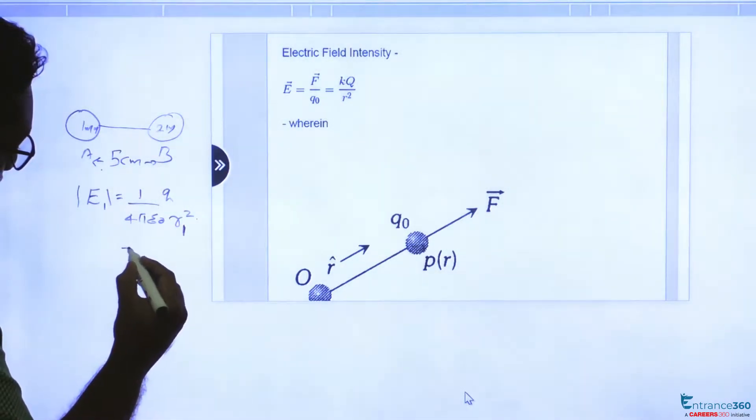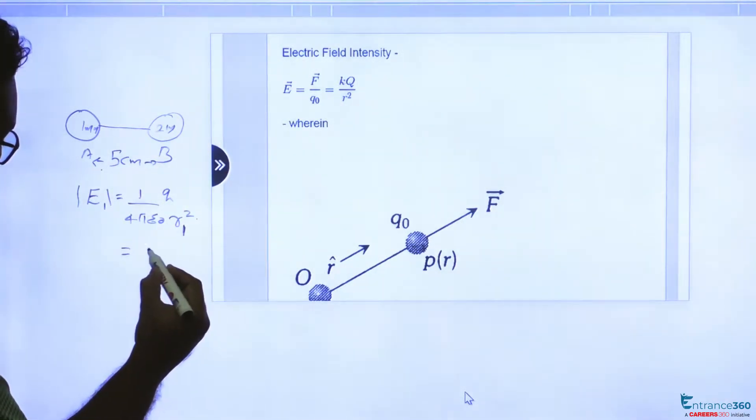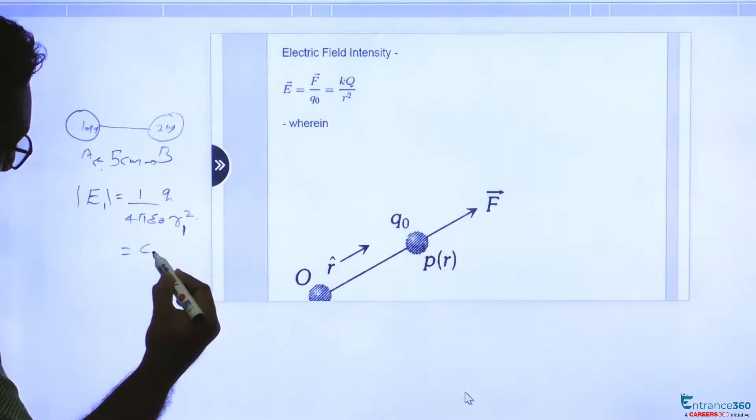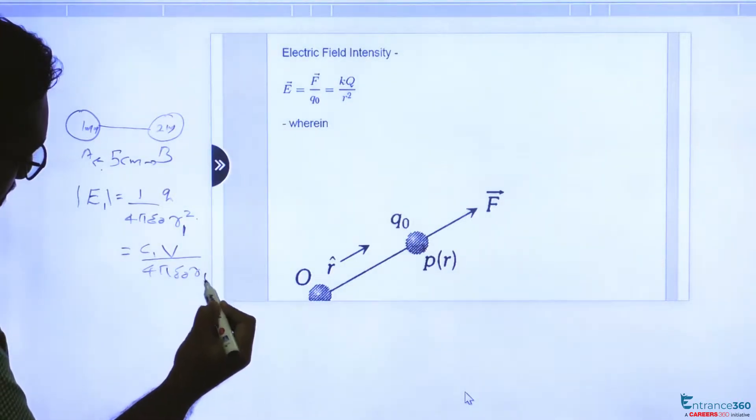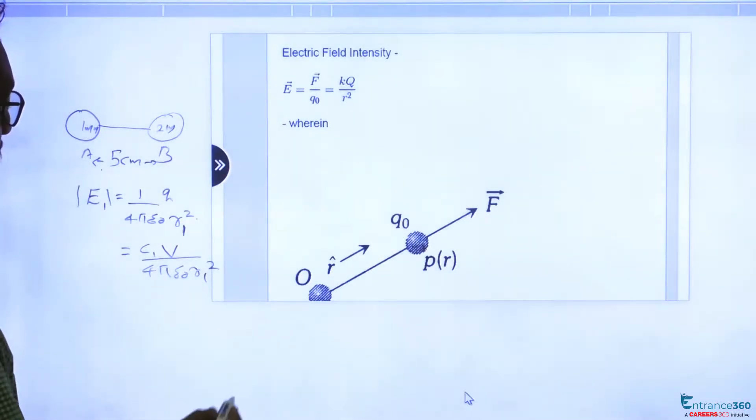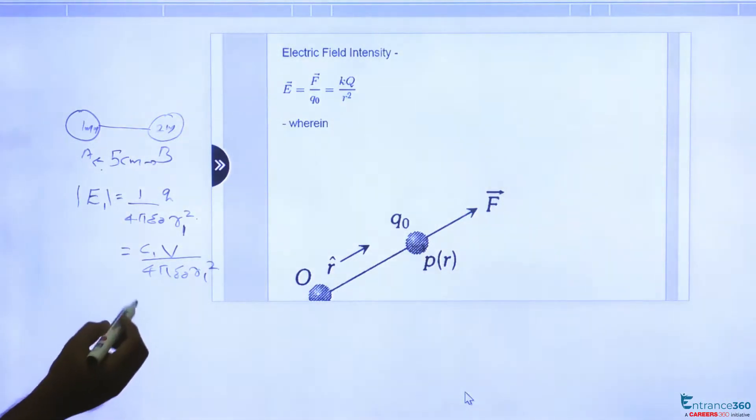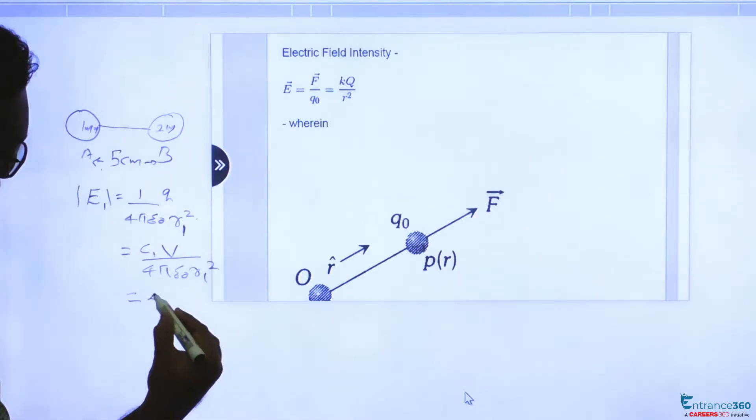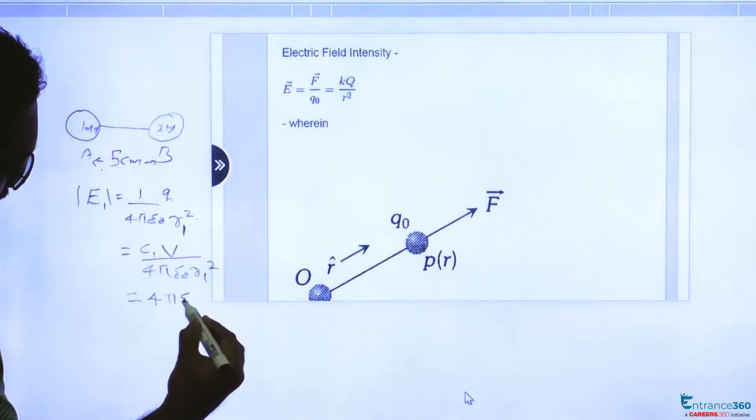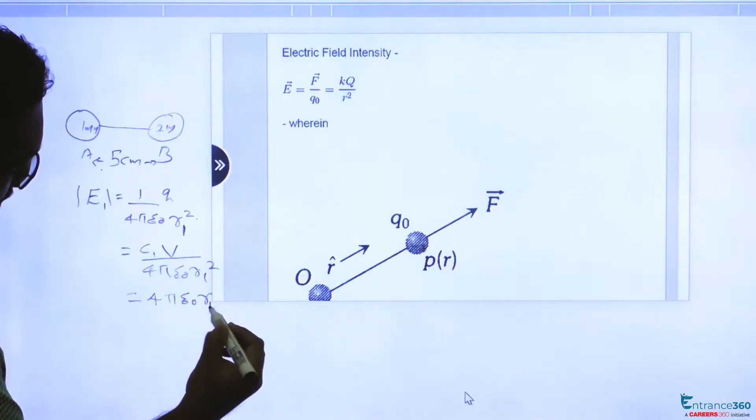You know that potential is same here, so q equal to C into V, V divided by 4 pi epsilon 0 r1 square. For a spherical conductor or spherical shell, capacitance is given by 4 pi epsilon 0 into radius.